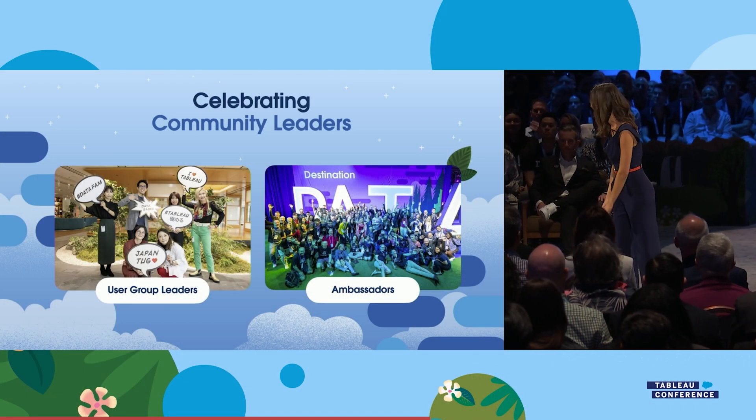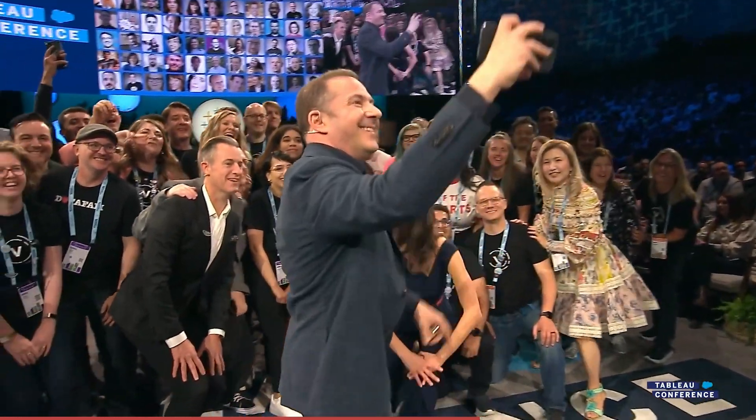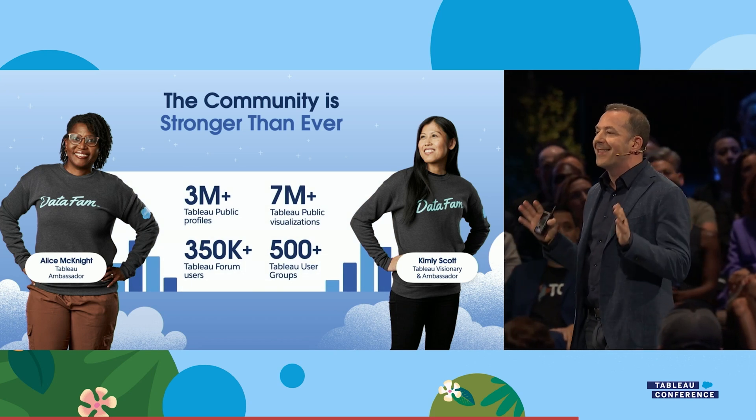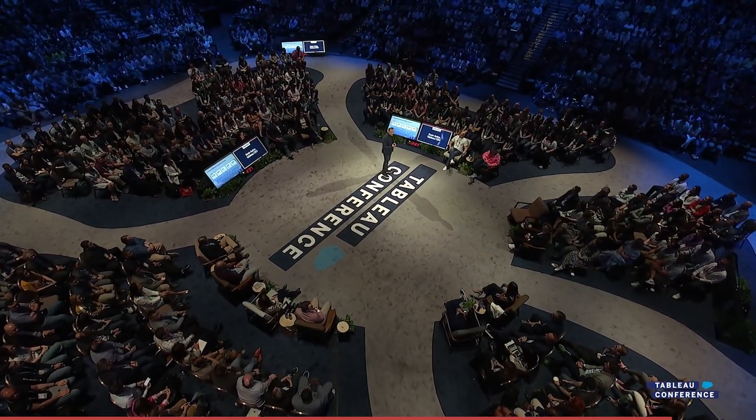Tableau then moved on to celebrating the community, which really helped break the ice of the conference. This keynote had a little bit of tension because everyone was keen to see what Tableau is going to do and how they're going to innovate. To answer that, Tableau had to put you in the right frame of mind. Talking about the community was a really good way of doing that — putting familiar faces on stage, calling out visionaries, ambassadors, user group leaders, and highlighting all the ways Tableau is helping people develop data skills. The overall message was: we're on this journey together. That circular setup in the middle was very deliberate, and it brought everyone's barriers down a little bit.